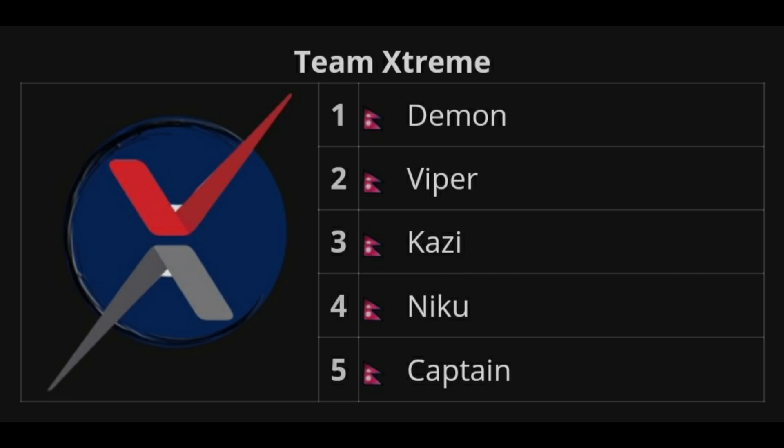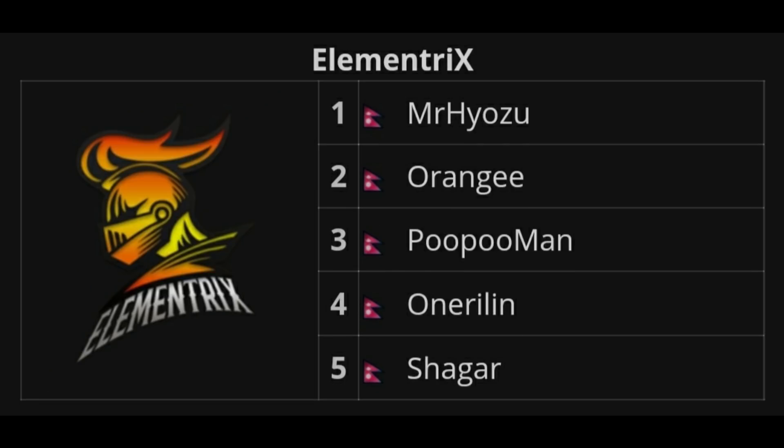Team Xtreme is already available and ready to receive the roster invite. One of the big names is Element Tricks — their roster includes Mr. Yojo, Orangey, Pupaman, and Honor Lin Chaynon. They were also in the previous roster, and they are already good enough for the invite.